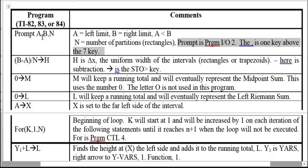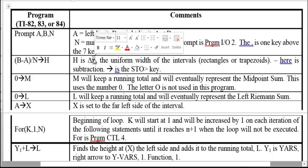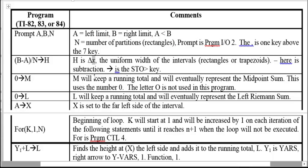The first thing the program computes is delta x: (B minus A) divided by N is stored as H, which represents the uniform width of the rectangles or trapezoids. The subtraction symbol here is the subtraction key, not the negative key, and the arrow is the store key accessed via the STO button.